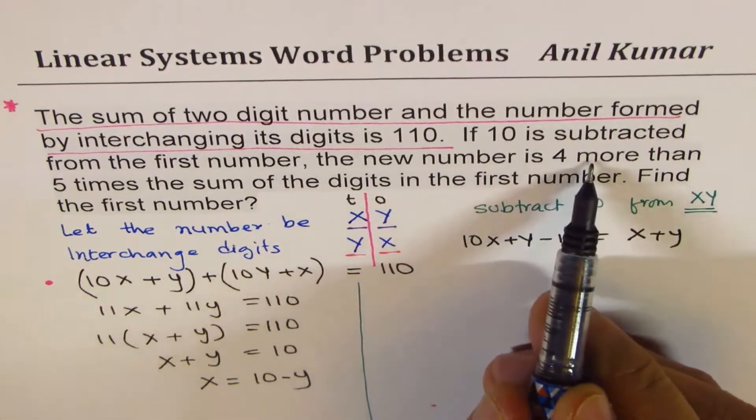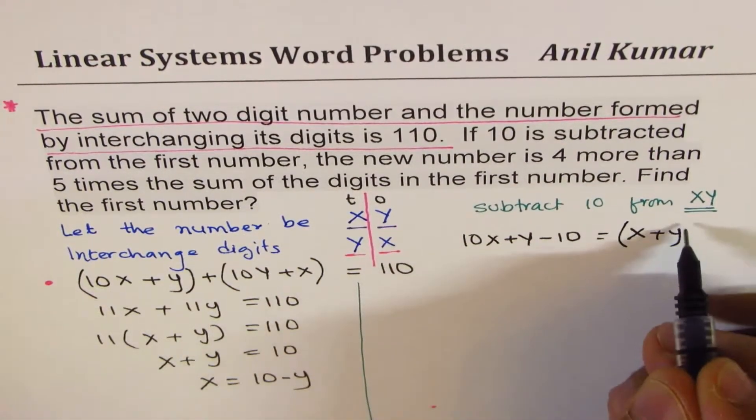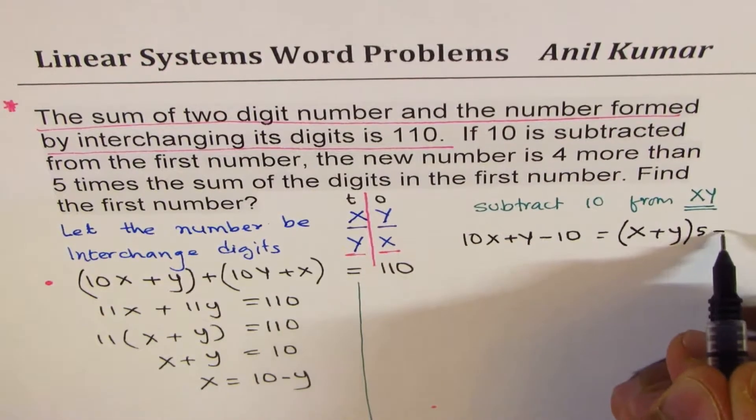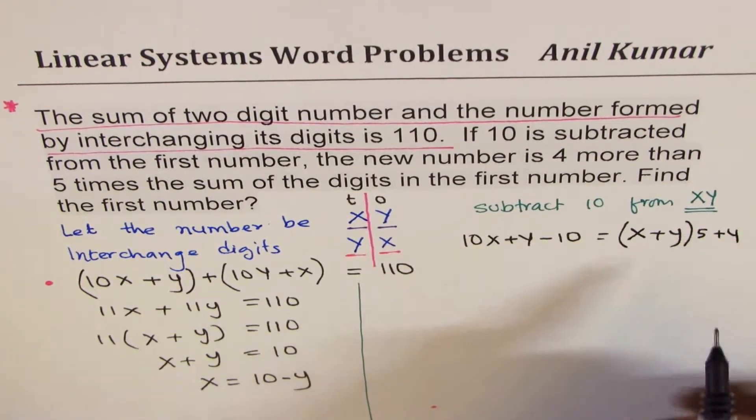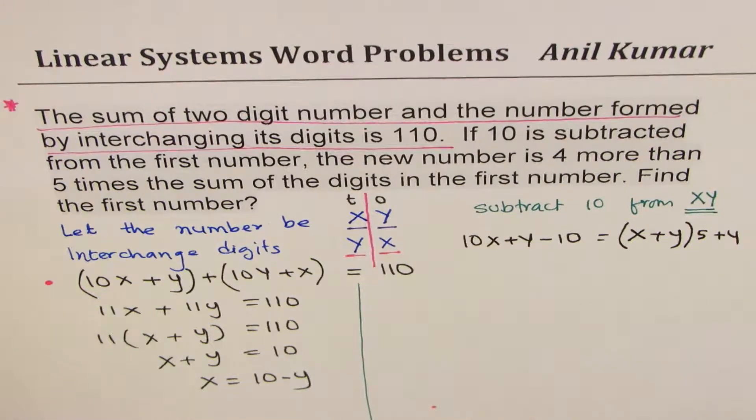Is 4 more than 5 times, so you do 5 times this, and then add 4. 4 more than 5 times the sum. So that is how you get the second equation.